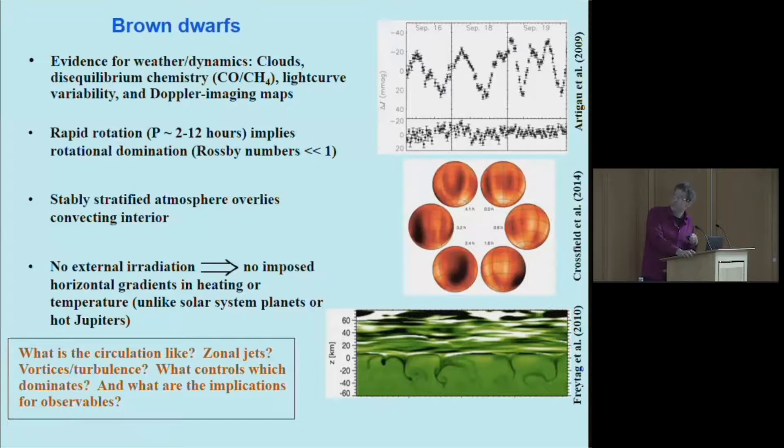A key question here then is what is the circulation like in this regime? There have been some models, like this one, a nice paper from almost 10 years ago by Bernt Freytag showing how you can produce these waves. But this is a small 2D box calculation just covering like one percent of the surface of the brown dwarf and doesn't apply to the overall interior and doesn't include rotation.